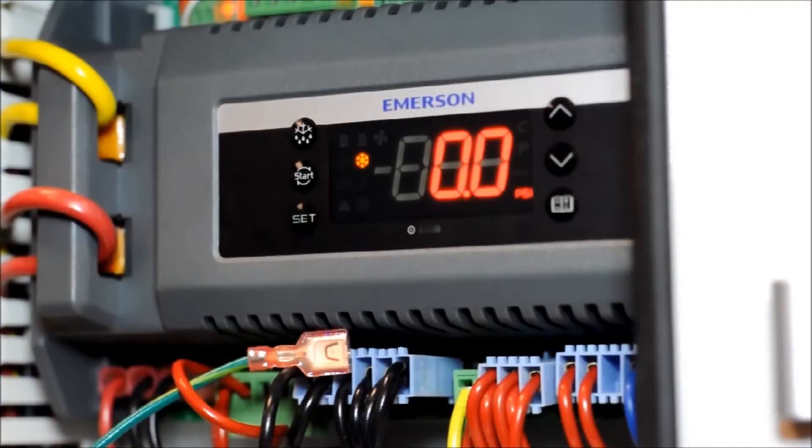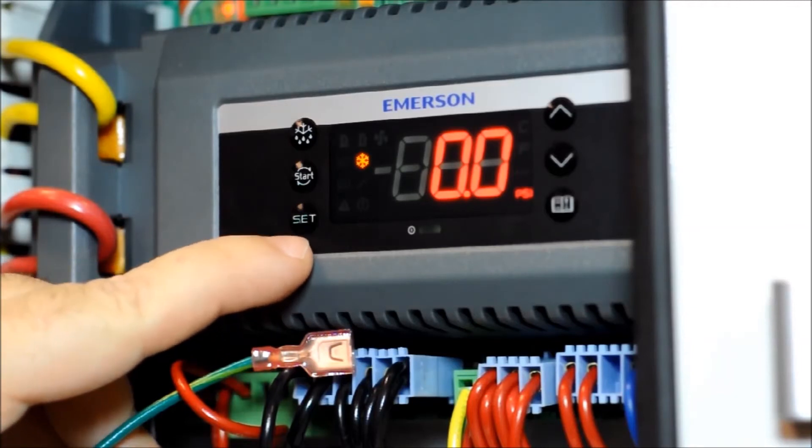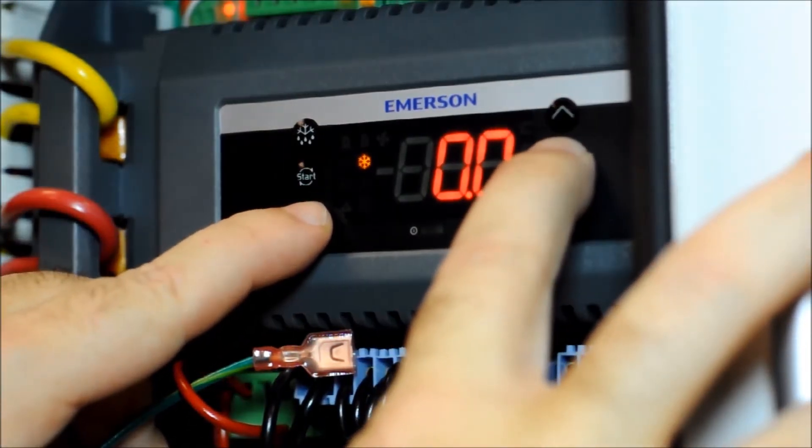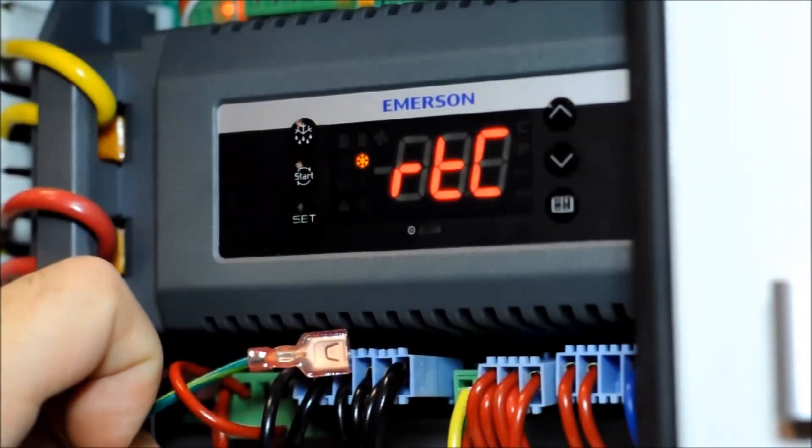In order to program the control, it operates like any other Dixelle controls that you might be familiar with. In order to enter the programming menu, you simply use the set button and the down arrow button and you hold those for about three seconds and that will enter you into the programming mode.